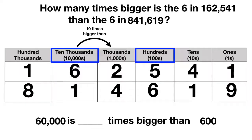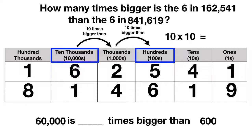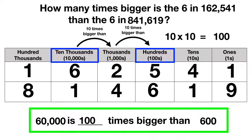So 10,000s are 10 times bigger than thousands, and thousands are 10 times bigger than hundreds. To get from 10,000s to hundreds, you move two place values to the right, and each time it gets 10 times bigger. So 10 times 10 equals 100 — when you move two place values to the right, your number is 100 times bigger. So 60,000 is 100 times bigger than 600.